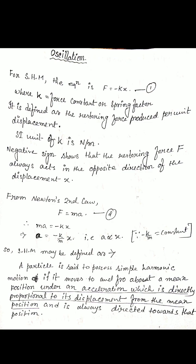From Newton's second law, F equals m times a. Comparing this with equation 1 (F = -kx), we get the expression for acceleration: a equals minus k by m times x. Since k by m is a constant, we can write that acceleration is directly proportional to displacement.